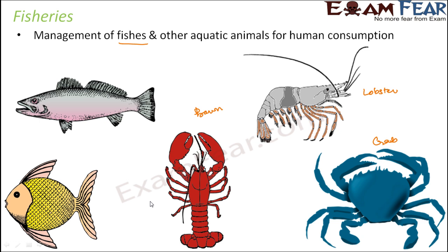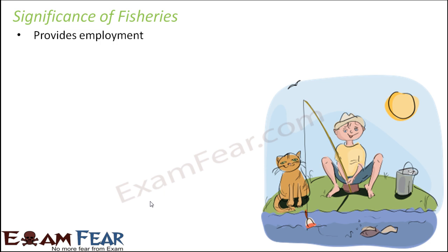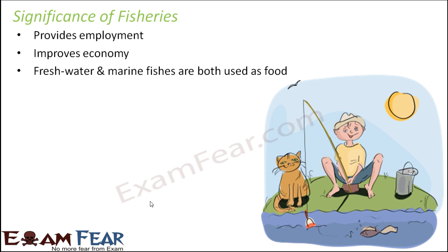The importance of fisheries: it provides employment to a lot of people — those who catch and sell fish in the market. It improves the economy, both by supplying food within the country and by exporting fishes. Both fresh water and marine water fishes are used as food. Some fishes prefer salty water and some prefer normal water; different types of fishes exist in seas as well as ponds, and both are consumed by people.